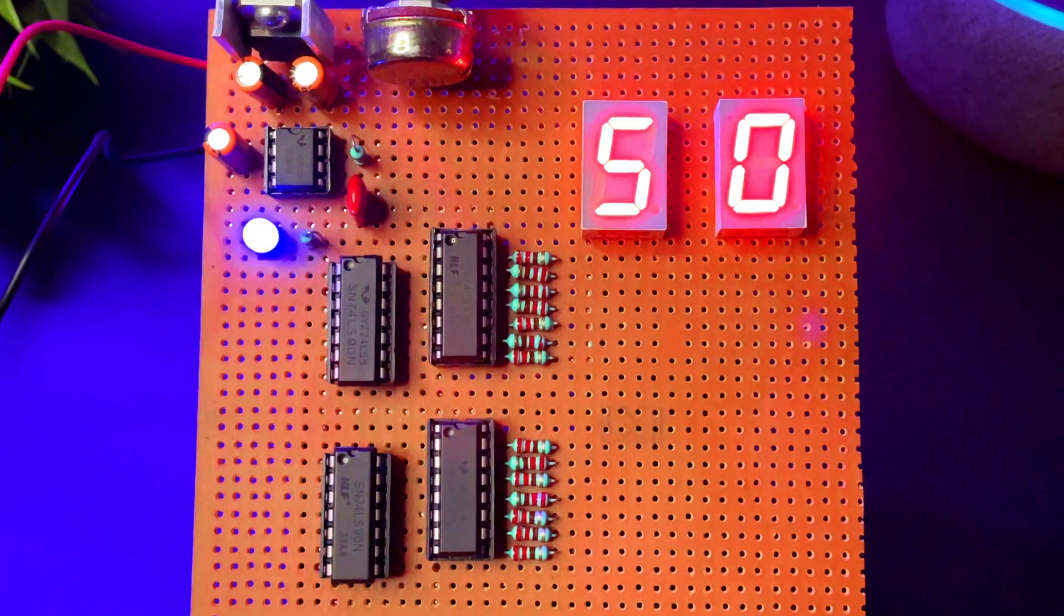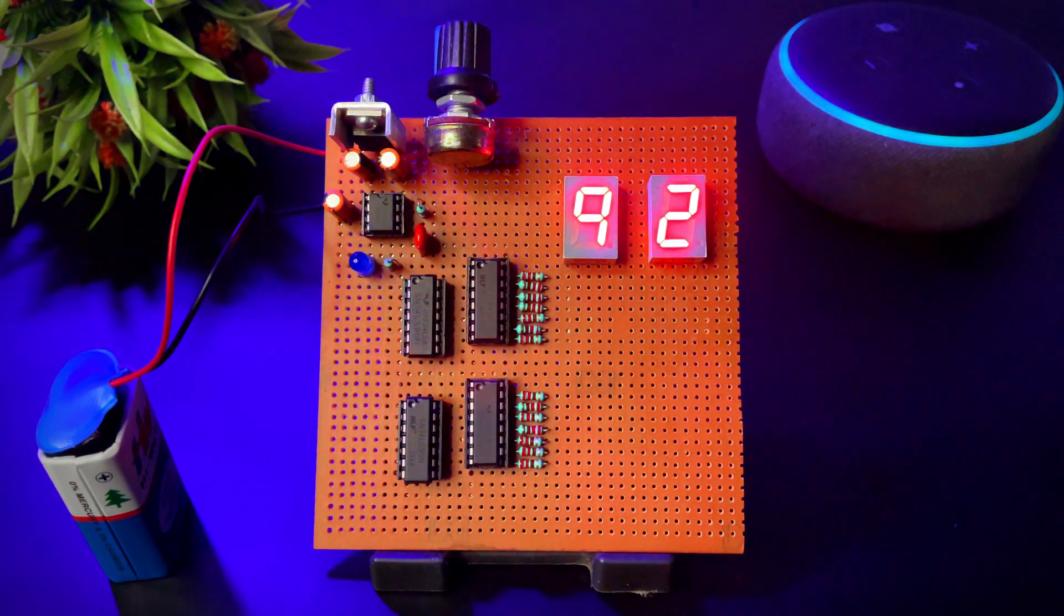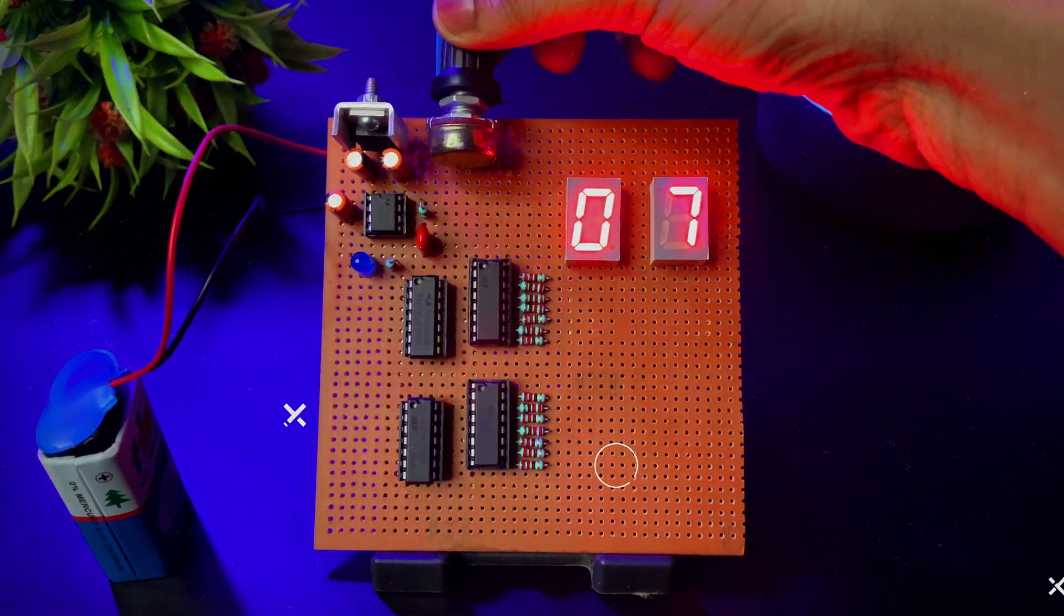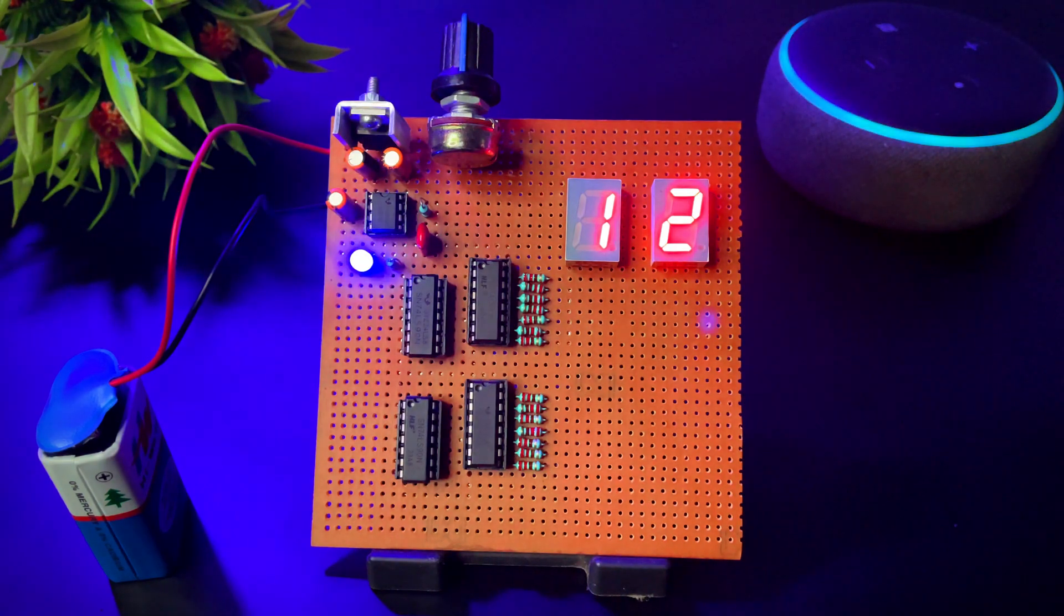The display starts counting automatically. Each pulse from 555 timer is incrementing the count. And the 7 segment display shows it in real time. You can adjust the counting speed by rotating the knob of potentiometer.